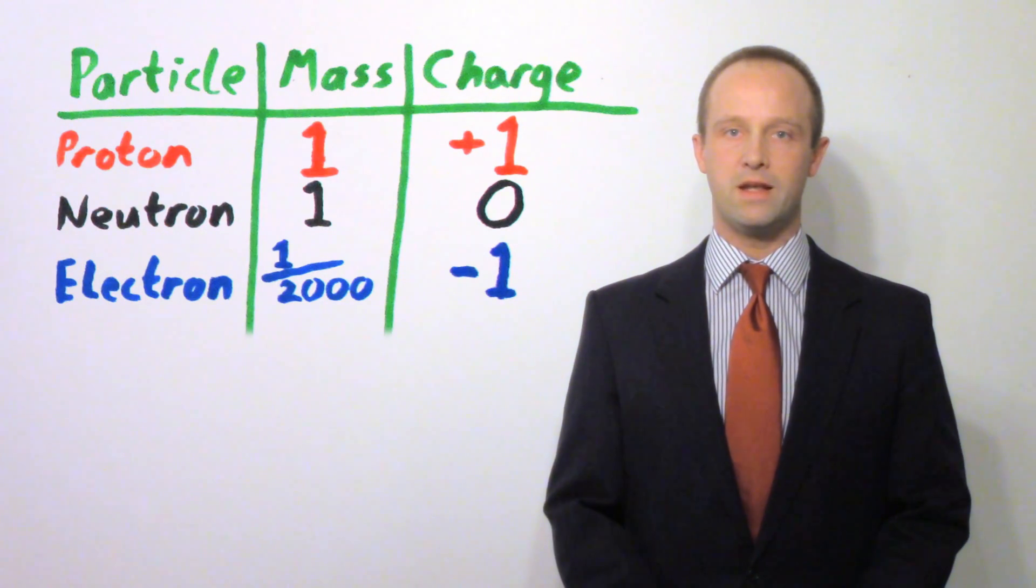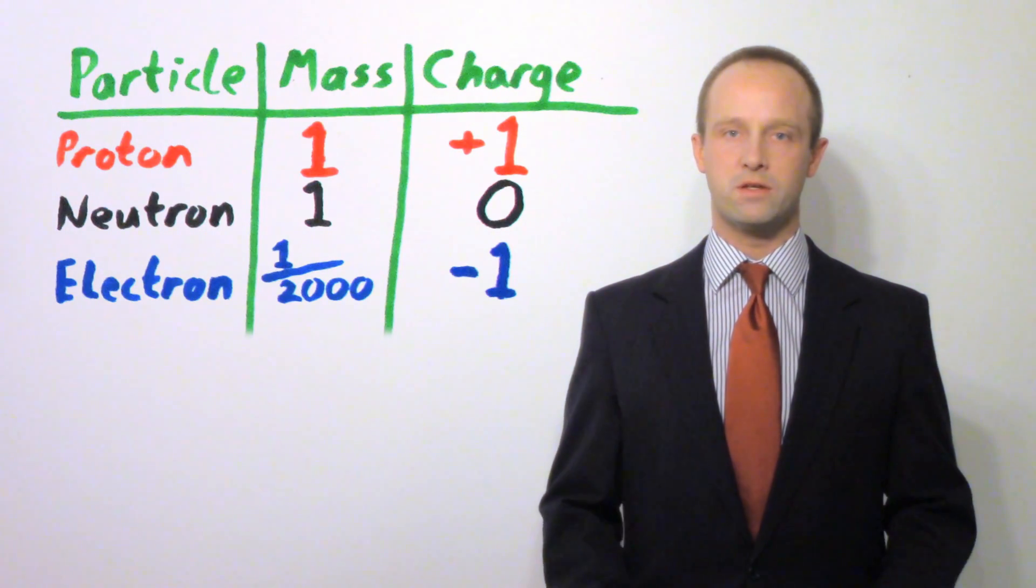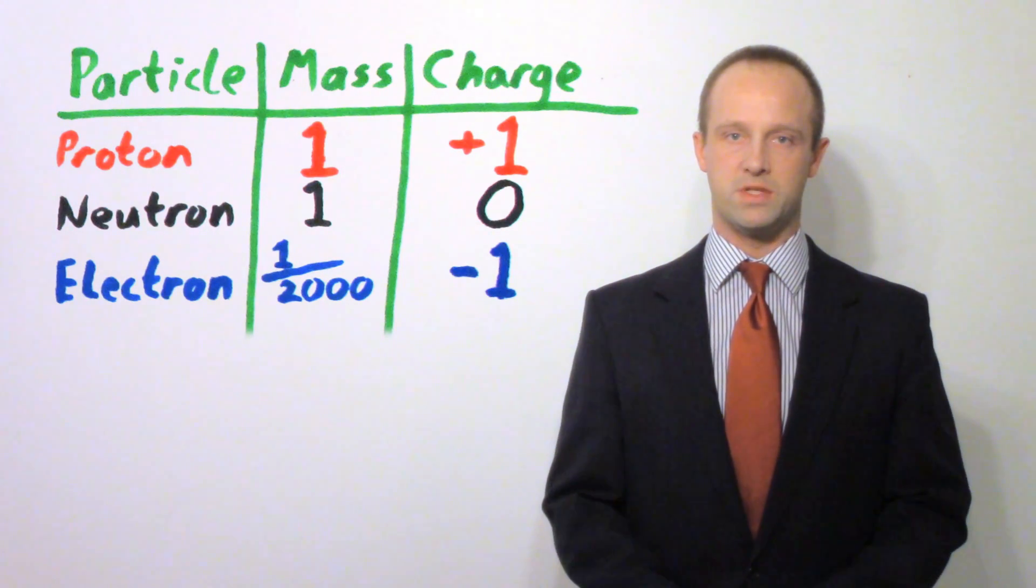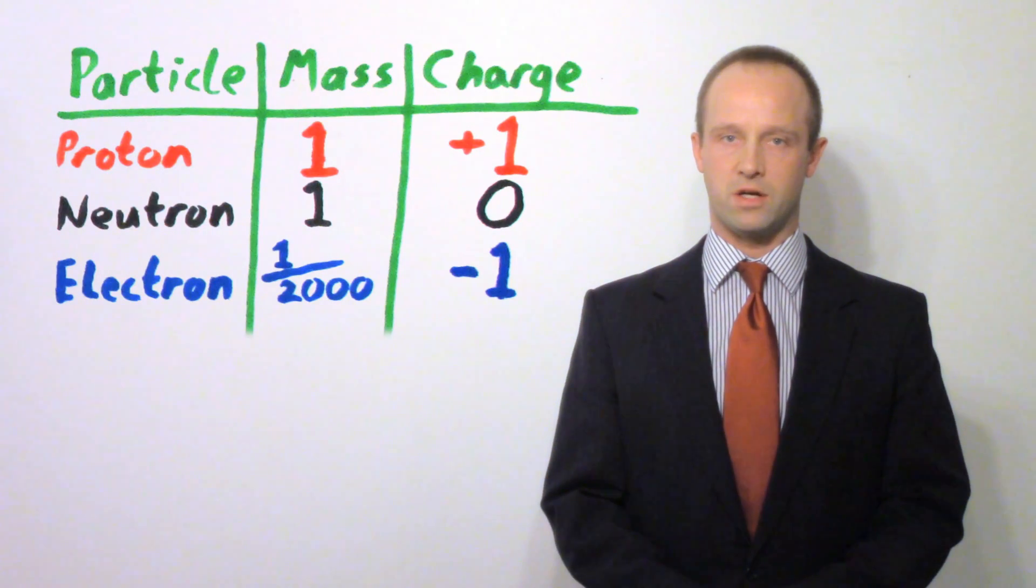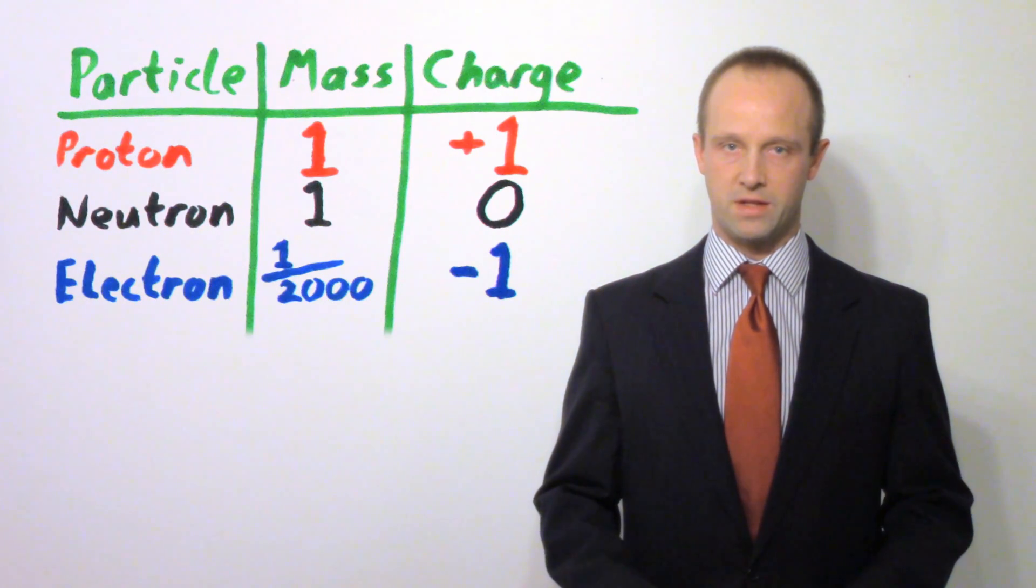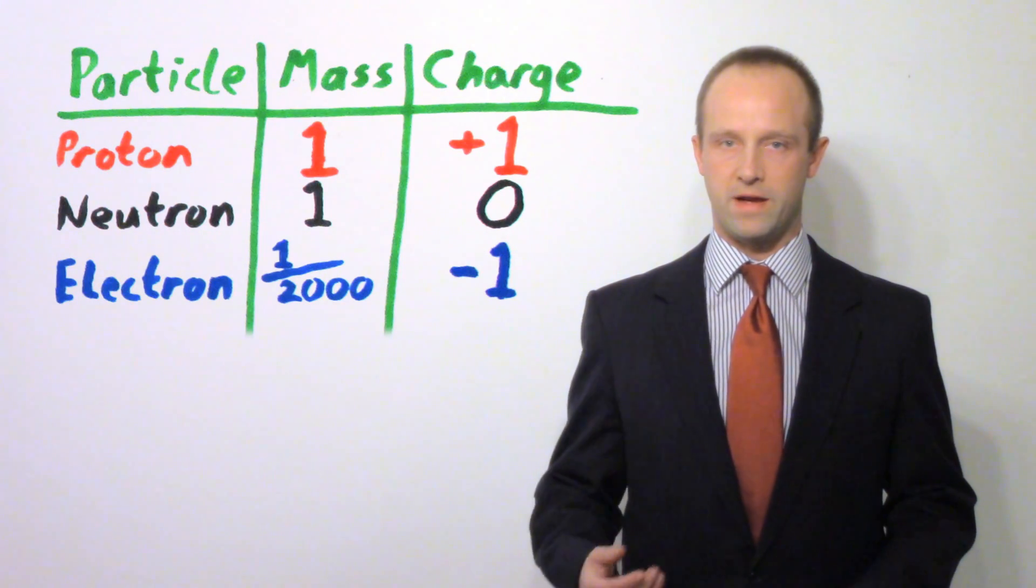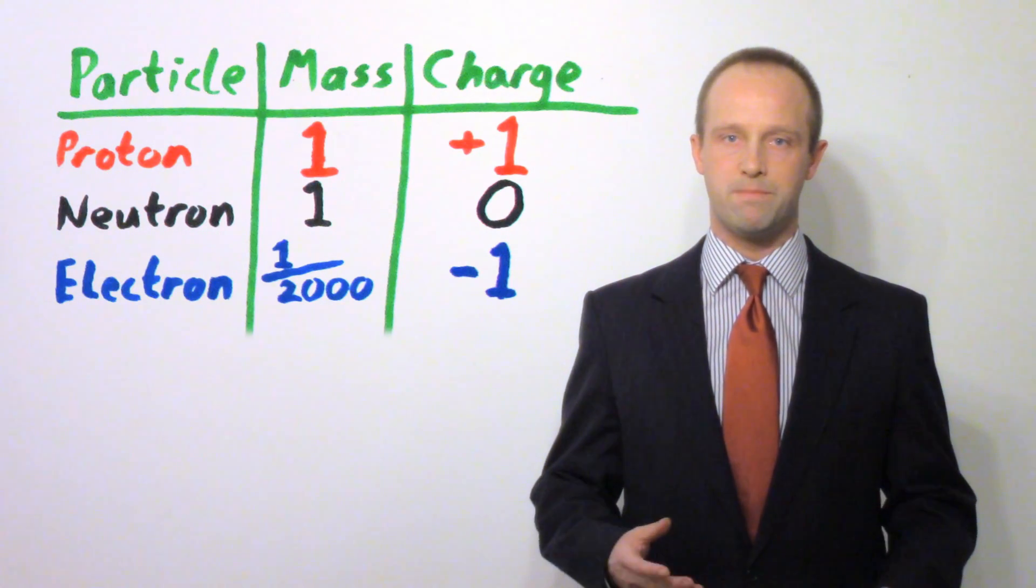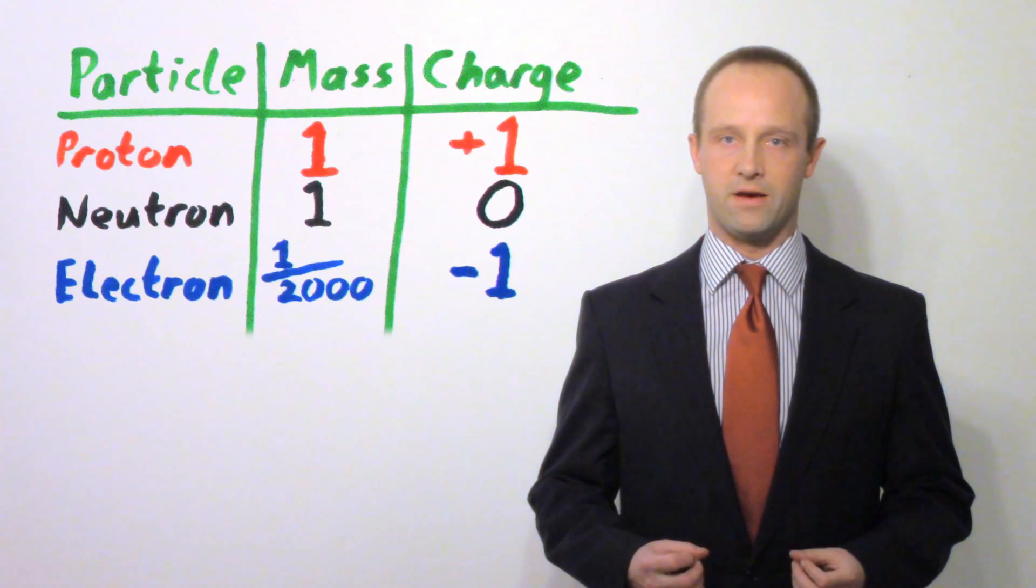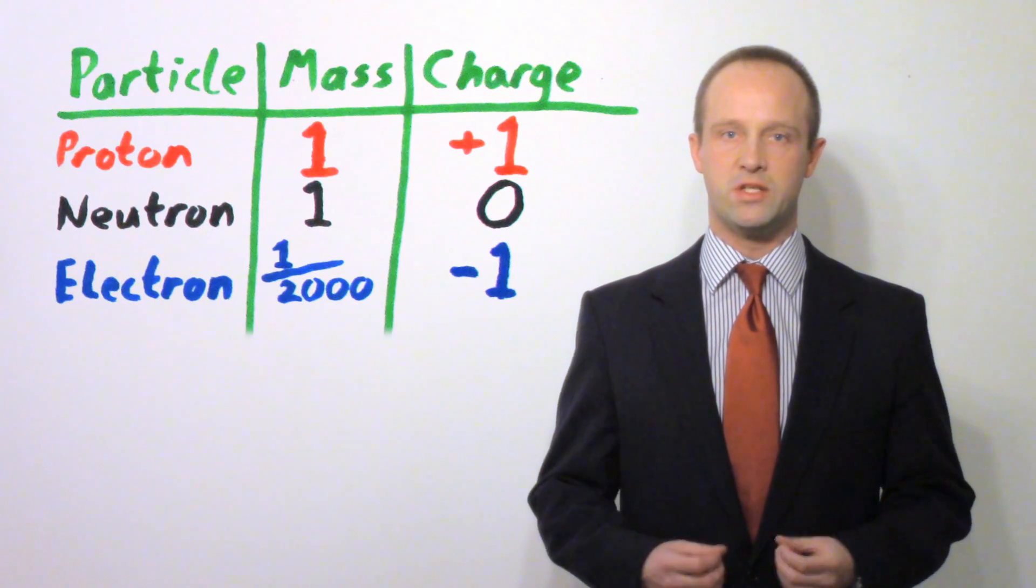In a normal atom, you get an equal number of electrons and protons. And so, because you've got an equal number of equal and opposite charges, the overall charge on an atom is zero. The charges are balanced. If you add an extra electron or remove any electrons, then you actually unbalance that and you get an ion. That particle, that atom will be charged.